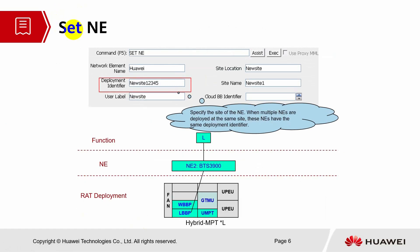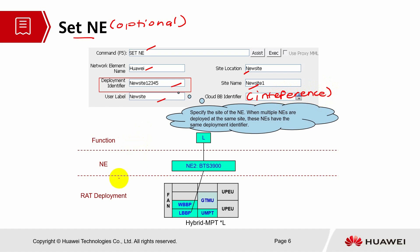Next we move into set NE. As mentioned earlier, set NE is an optional command. Set NE holds information about the network element: deployment ID, user label, site location, site name, and cloud BB. Cloud BB is for interference — you need to have the hardware. If you don't have the cloud BB hardware, you don't have to configure this part. You have to know the deployment based on the hardware — the network element type, product type, and functions, whether this is LTE only or a single-brand base station. If multiple NEs are deployed at the same site, these NEs must have the same deployment ID.